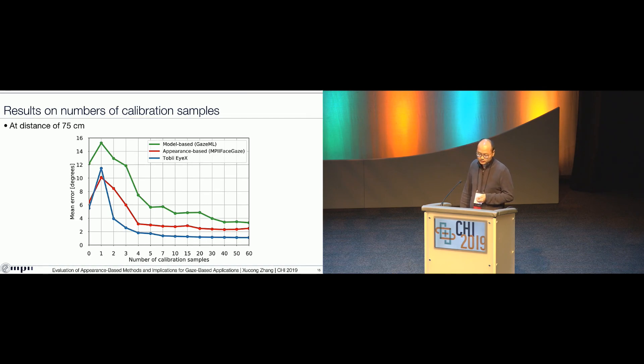And as you can see from the figure, if we just have one calibration sample, it will cause much worse performance. That's because it can cause overfitting for all those models. But if we have around four or five samples, then we can make the performance reach a reasonable level. And again, the Tobii RX achieves the best performance and the appearance-based method can achieve comparable results.